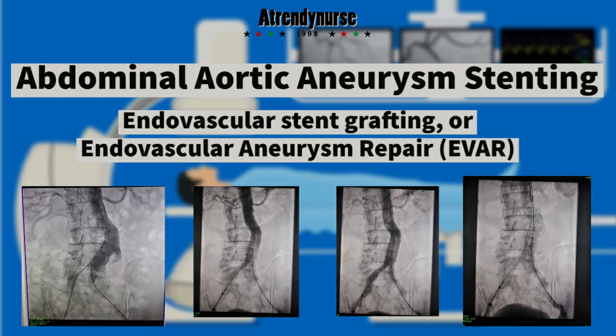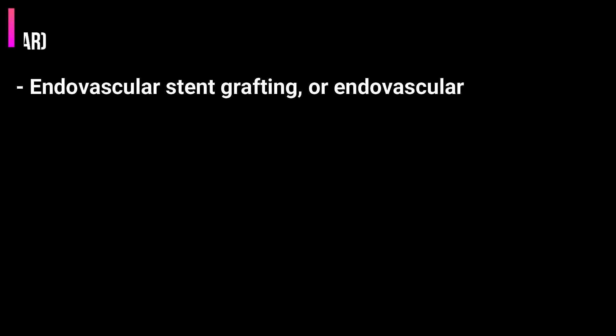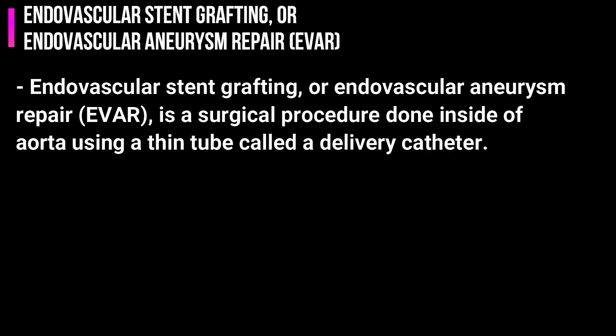Hello everyone, today we are going to discuss what is abdominal aortic aneurysm and how the abdominal aortic aneurysm repair procedure is done in the cath lab. Endovascular stent grafting, or endovascular aneurysm repair, is a surgical procedure done inside the aorta using a thin tube called a delivery catheter.